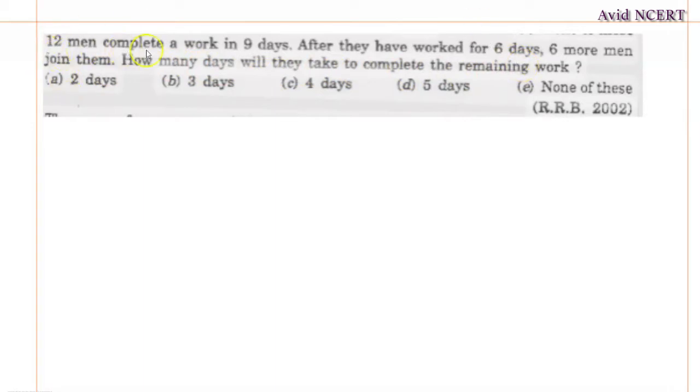From the first sentence, 12 men complete a work in 9 days. Therefore, we can find for 1 man, which equals x days.